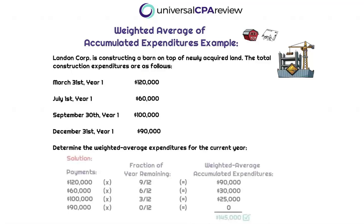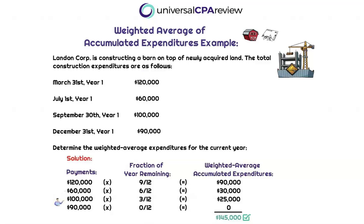We're going to take each individual payment and focus on the fraction of the year remaining. The first payment of $120,000 was made on March 31st, year one — so there are nine twelfths of the year remaining. $120,000 times nine-twelfths gives us $90,000. Payment number two, $60,000, has six twelfths of the year remaining, so six-twelfths times $60,000 gives us $30,000. The $100,000 payment has three twelfths of the year remaining — made on September 30th, with October, November, and December left — so $100,000 times three-twelfths gives us $25,000.